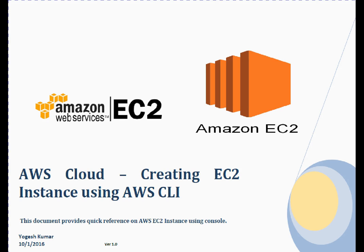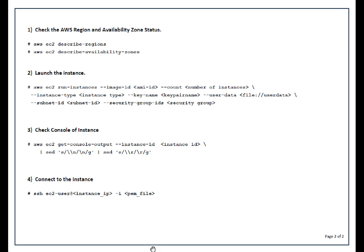So beginning with this video, to create an EC2 instance using CLI we have to check a couple of things. First, which region or availability zone we are going to choose. Before creating an instance you can check the health status of that particular region or availability zone using the commands listed on screen.